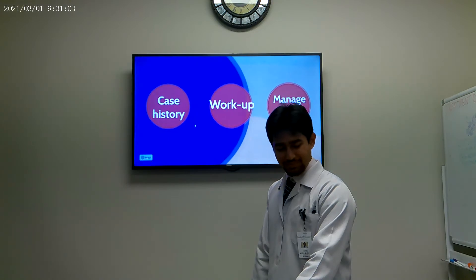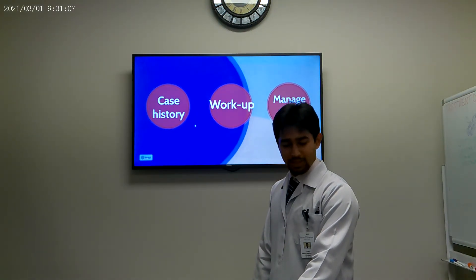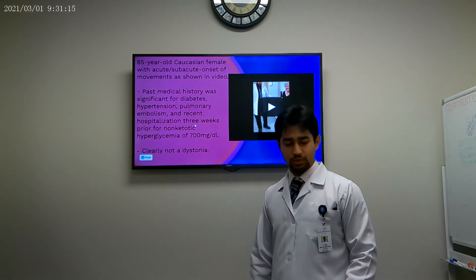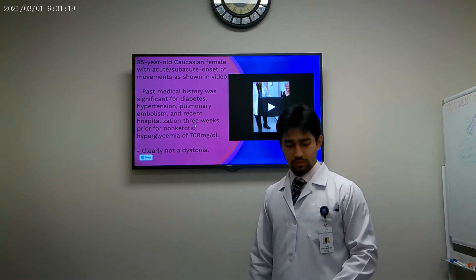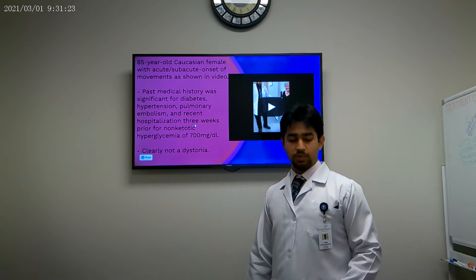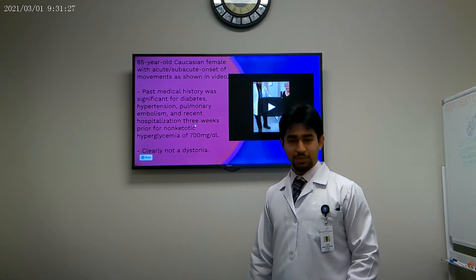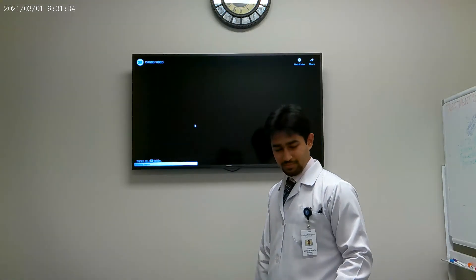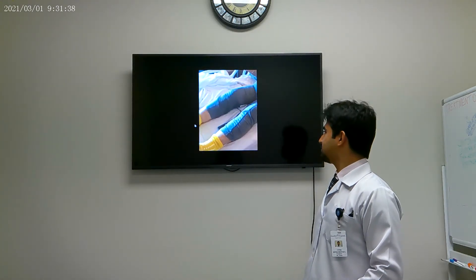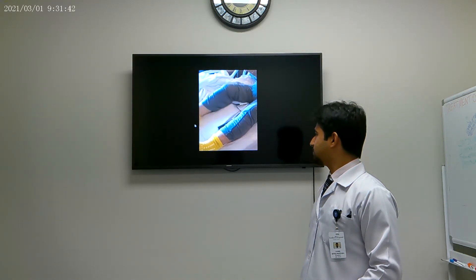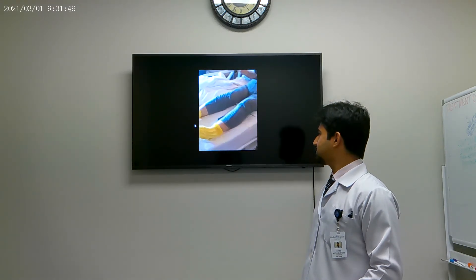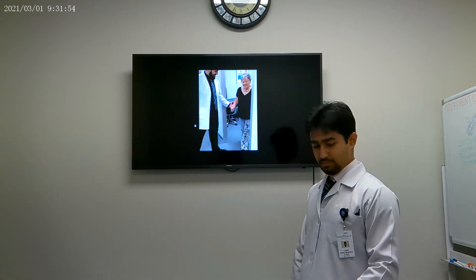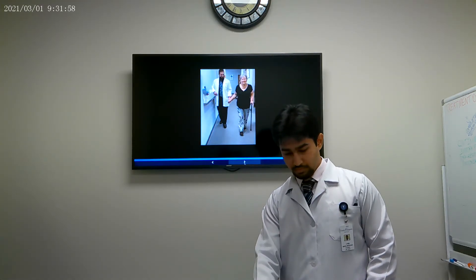Now we're going to get to the fun part. We're going to discuss the differential diagnosis, and this is a very unique case which was actually seen in our HMC clinic. So the case is of an 85-year-old Caucasian female who has a severe acute onset movement disorder, as we will see in the video. She had a history of diabetes, hypertension, pulmonary embolism, and she was hospitalized for three weeks for hyperglycemia with glucose at 1100.